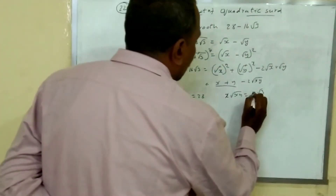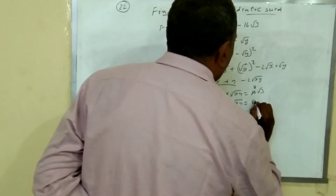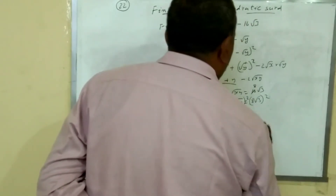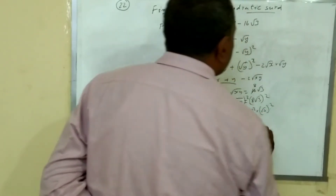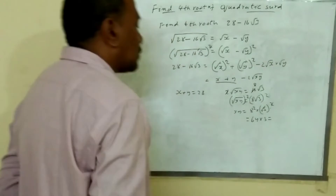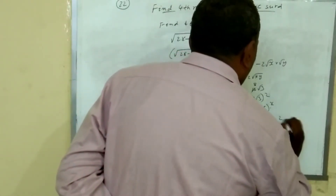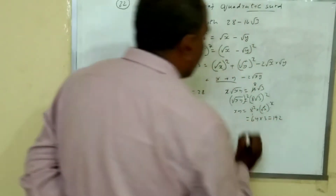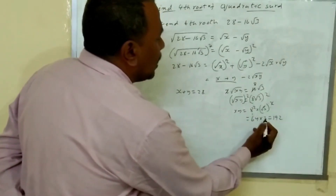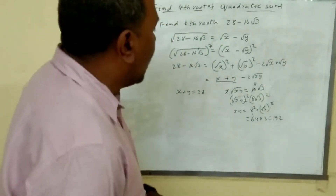Cancelling the 2, root xy equals 8 root 3. Squaring both sides again gives xy equals 64 times 3, which equals 192. So we have x plus y equal to 28 and xy equal to 192.